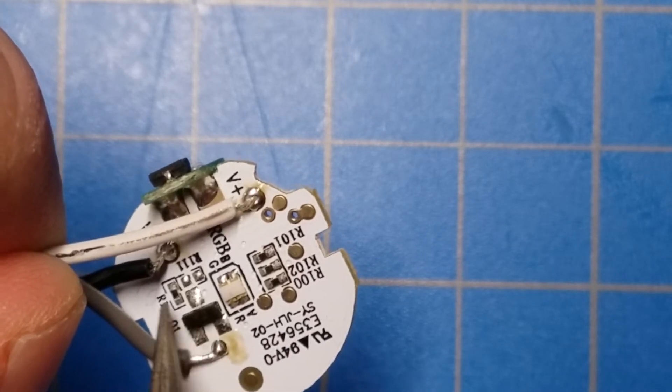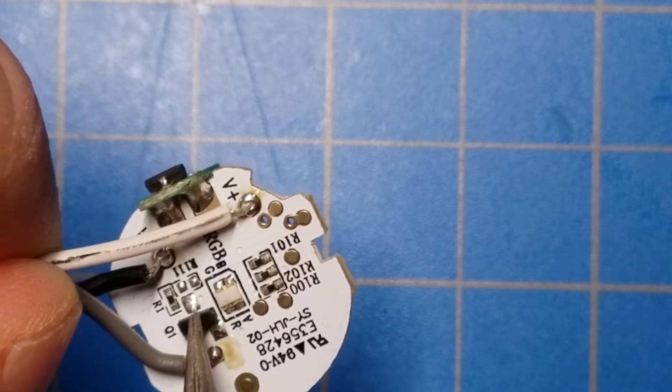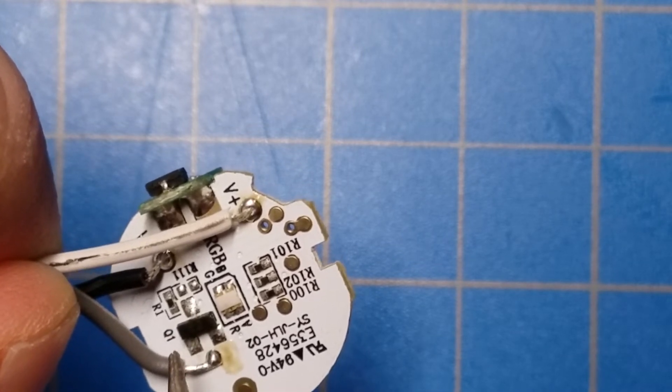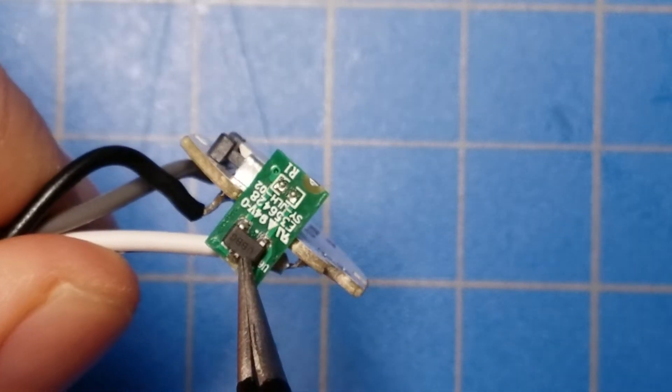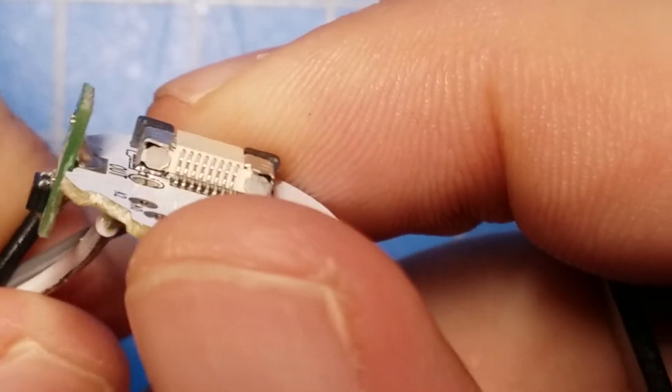And then over here you have another resistor and this transistor that work together to invert the signal coming out of this chip here that's soldered off to the side.